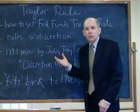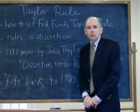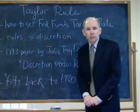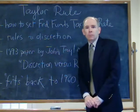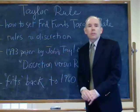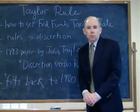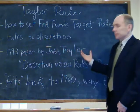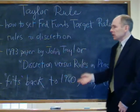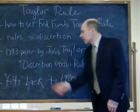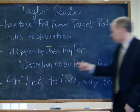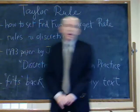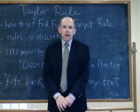Some economists came along and said we really can't do that. What we should do instead is just set basic rules about how to set the money supply, or how to set the Fed Fund's target rate, or how to do spending and taxation, and then let private parties work around that. One of these economists was John Taylor, usually associated with Stanford University, and in 1993 he published a paper called 'Discretion vs. Rules in Practice,' where he actually coded up a rule about how to set the Fed Fund's target rate.